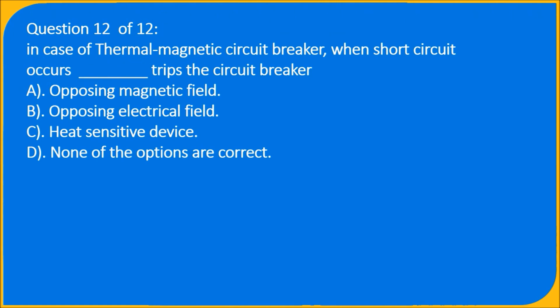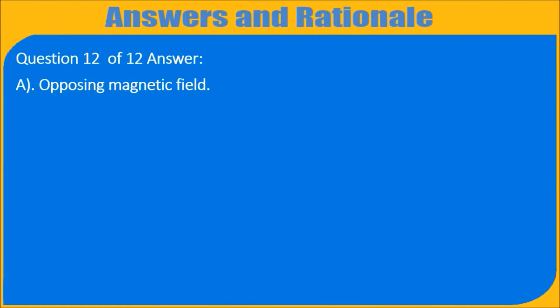Question 12 of 12: In case of thermomagnetic circuit breaker, when short circuit occurs, underscore trips the circuit breaker. A) Opposing magnetic field, B) Opposing electrical field, C) Heat-sensitive device, D) None of the options are correct. Question 12 of 12 answer: A) Opposing magnetic field.